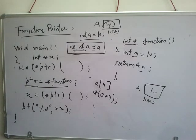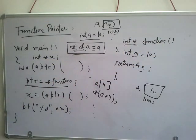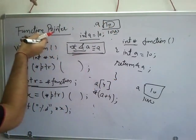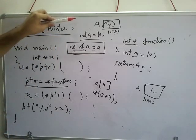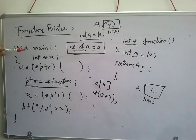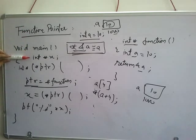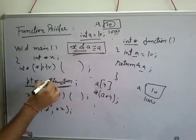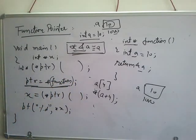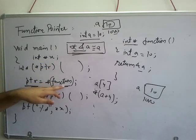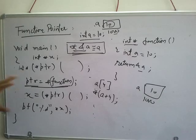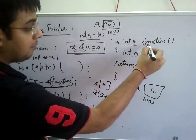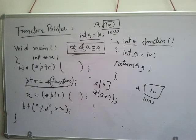One important thing: you have to write this function before your main. Why? Because the compiler is checking your entire code line by line. If you write main first, when the compiler comes to this line and sees 'address of function', it doesn't know what this function is - whether it's a variable, array, or function. So it will give you an error. You have to write this function before your main in your program. When the compiler reaches this line, it will know that this function is stored in memory and is being called.